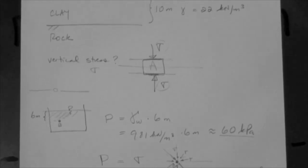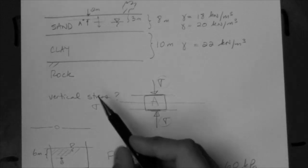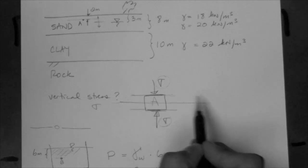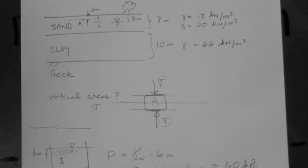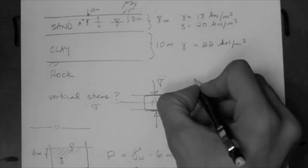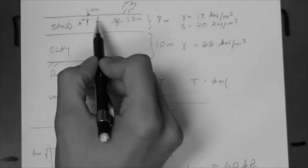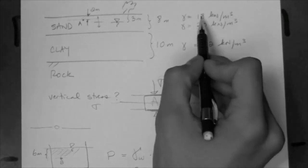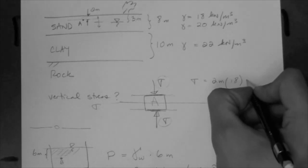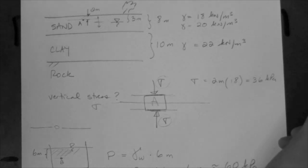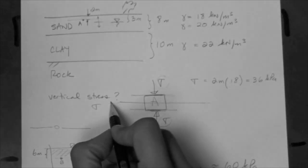Let's go back to our example with the soil profile. The question was: what is the vertical stress? Here's the vertical stress, here's the point, and here's the horizontal plane on which the stress acts. What we can do is adopt the fluids concept and say that the stress equals these two meters of material times the unit weight of the material above the point. That unit weight is 18 — because remember this material is dry. So 2 times 18 kN per meter cubed equals 36 kPa. That is the stress that acts vertically on the horizontal plane.